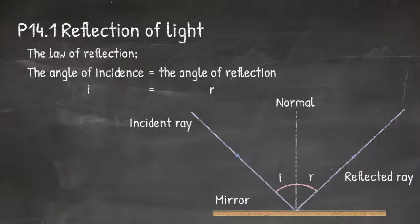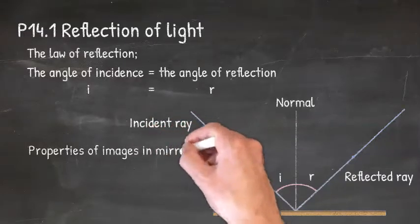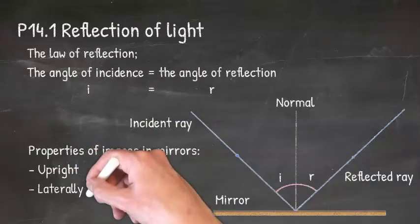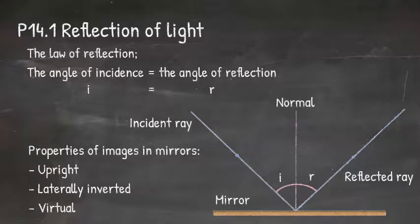The images formed by mirrors have three important properties. They are upright, laterally inverted which means the left becomes the right, and they are virtual.